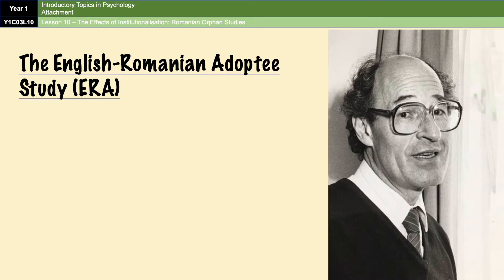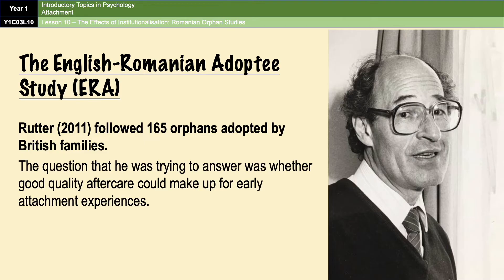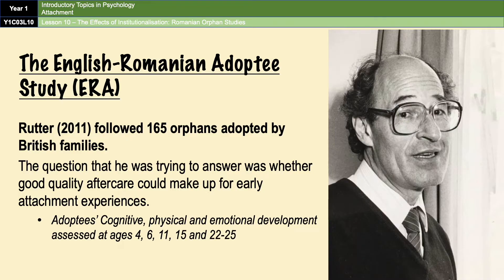One of the major studies that looked at this is called the English-Romanian Adoptee Study, conducted by Michael Rutter over the course of many years. This is the most important study and the one to remember in the most detail. Rutter followed 165 orphans adopted by British families, asking whether good quality aftercare could make up for negative early attachment experiences. The adoptees were assessed at various ages in terms of their physical, cognitive, and emotional development and compared to a control group of British adoptees.